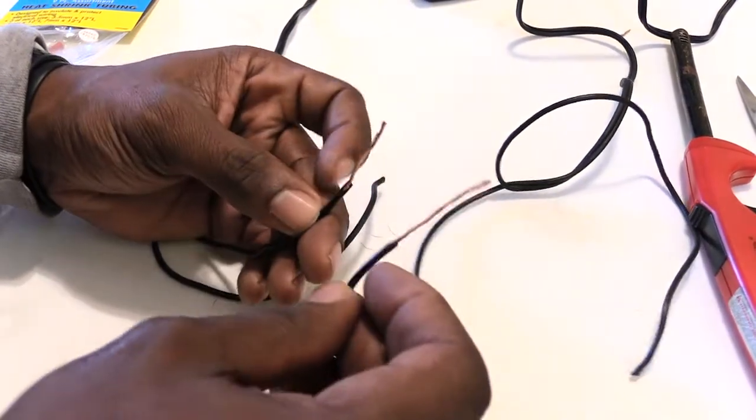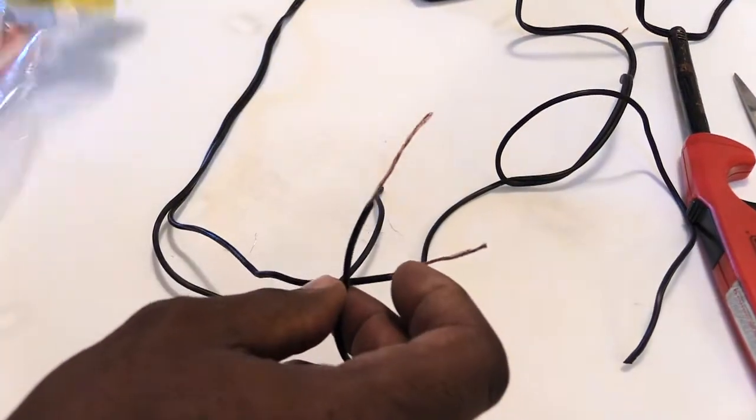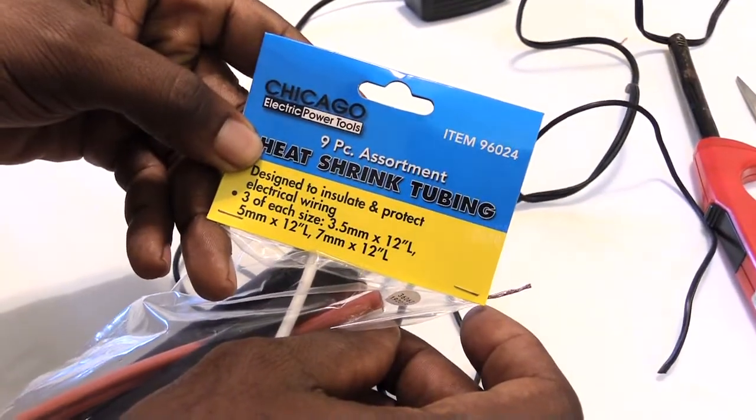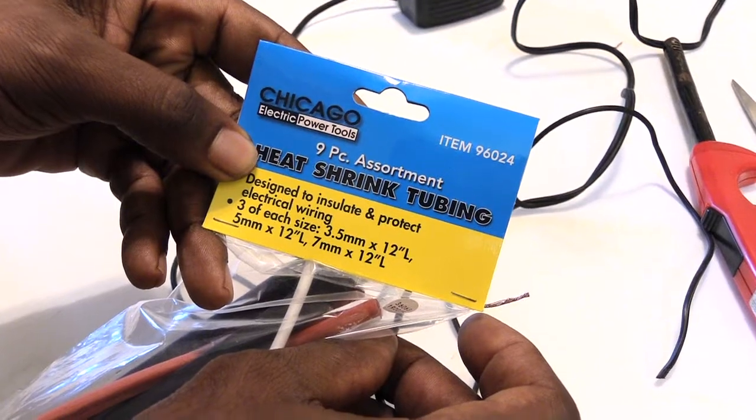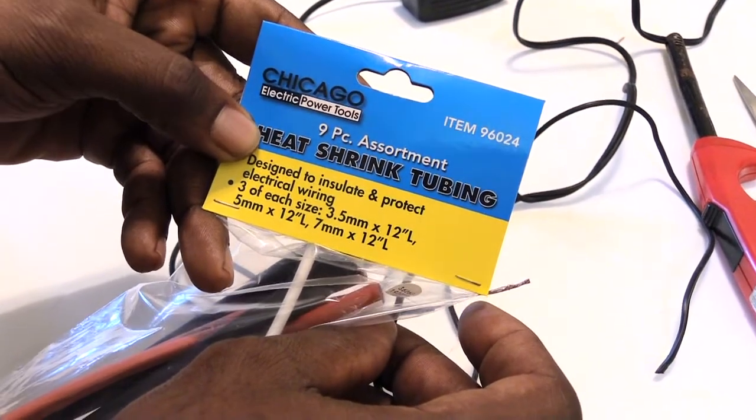I'm going to be splicing these wires together right here and putting some heat shrink tubing on top of the wire once I'm done splicing. This is pretty cheap to get, you can get it from Harbor Freight for about a dollar fifty.